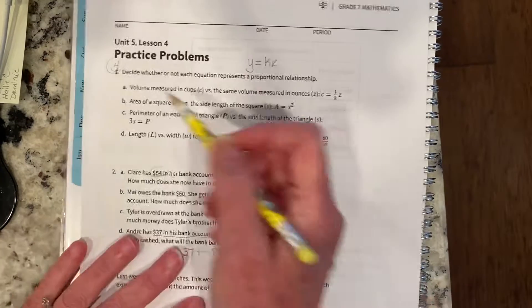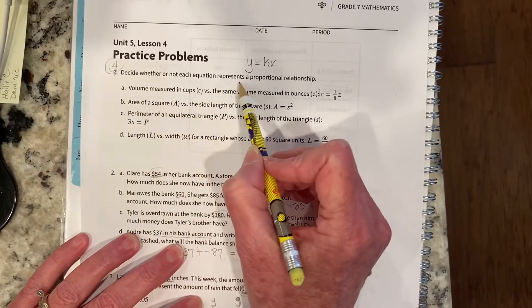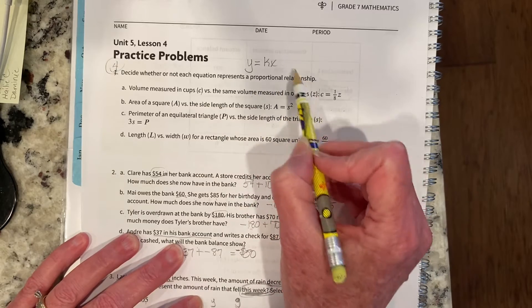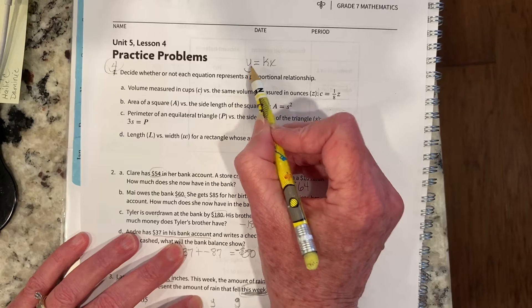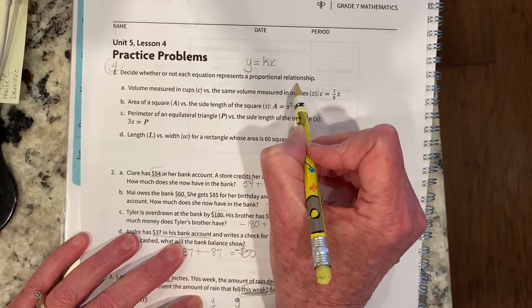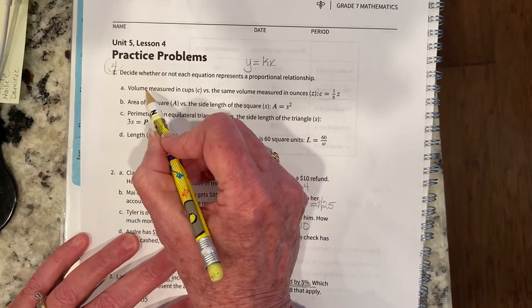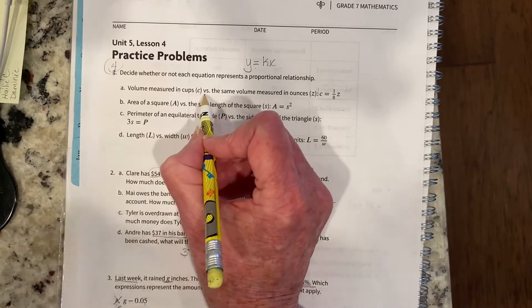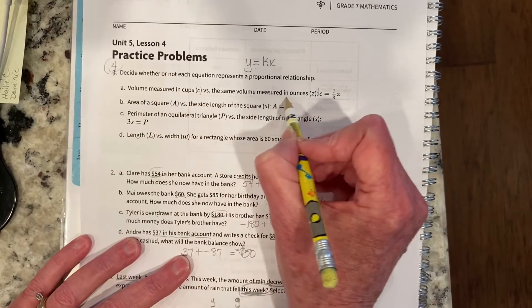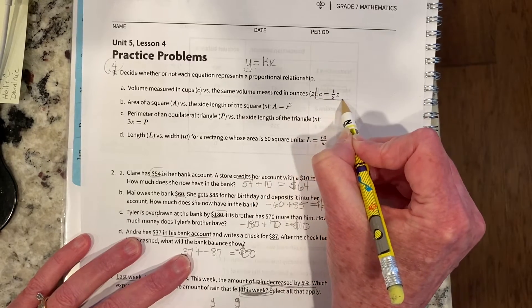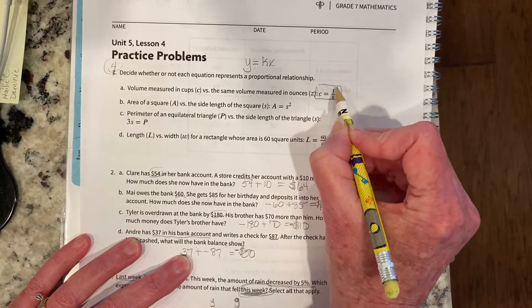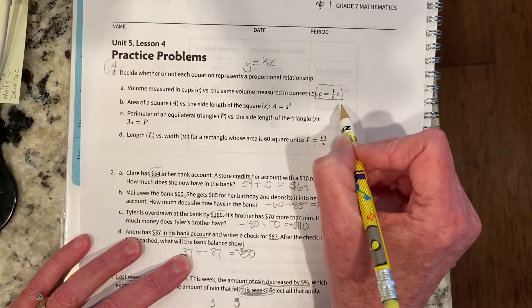All right, so we have to decide whether or not each equation represents a proportional relationship, and remember that equations need to be in the form of y equals kx to be proportional. So we're looking at this first one of volume measured in cup C versus the same volume measured in ounces Z. So here's our equation right here. C equals 1 eighth Z.